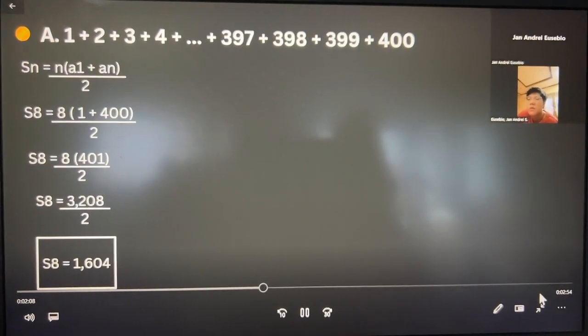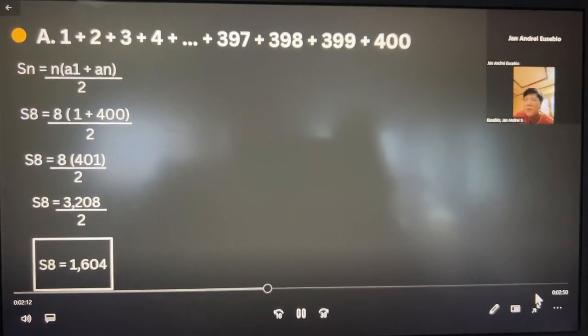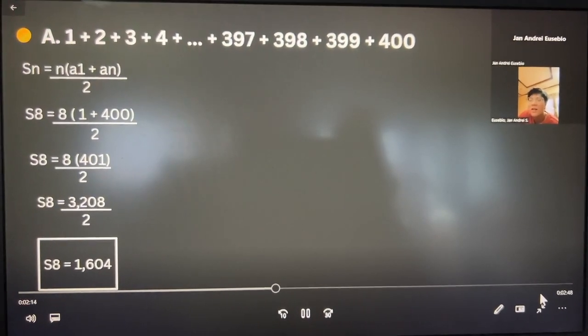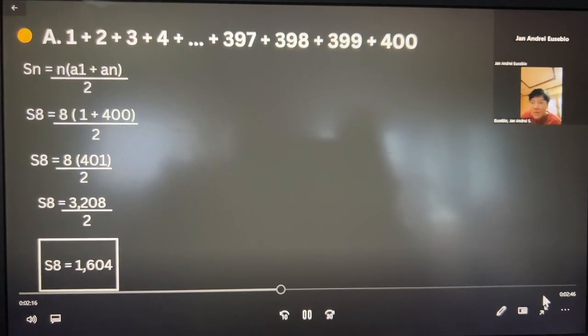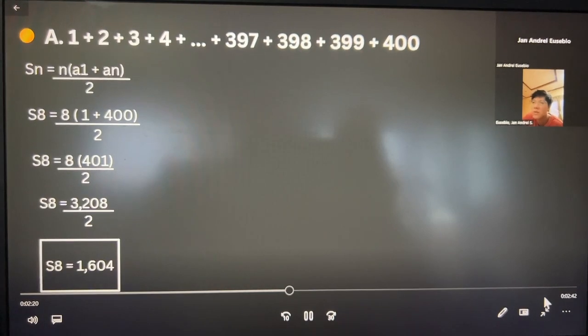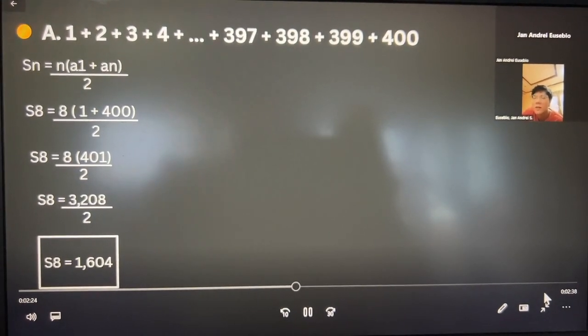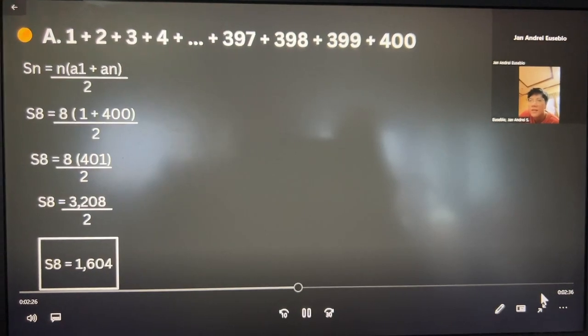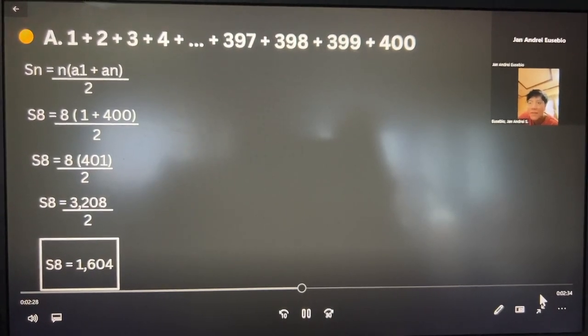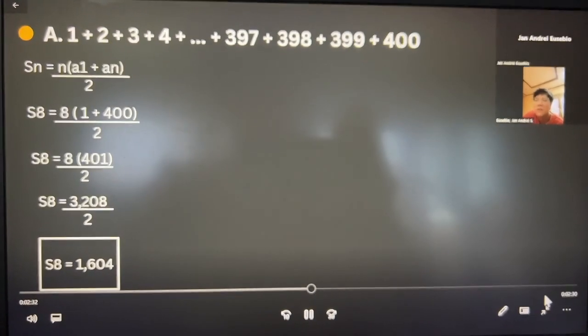So the next step is S sub 8 equals 8 in parenthesis bracket, 1 plus 400, over 2. And then the fourth step is S sub 8 equals 3,208.